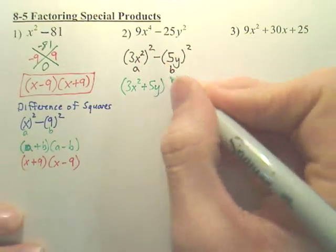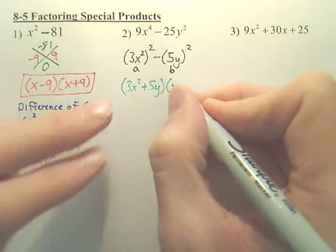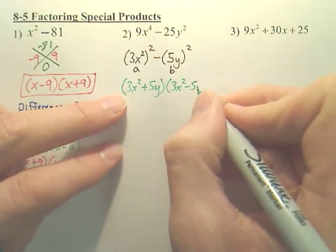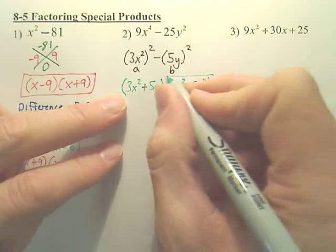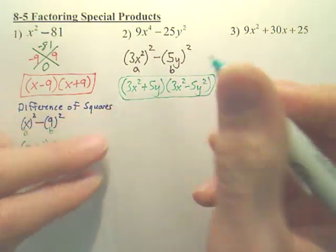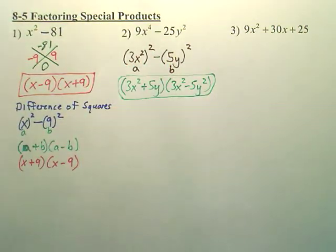So, a plus b. And then we also have a minus b. It's actually really cool, real easy, once you can spot the two squares. It's called a difference of squares.